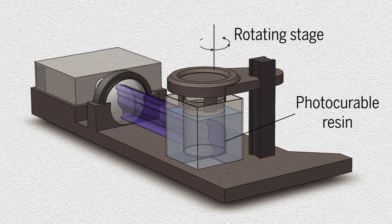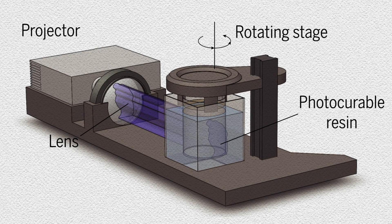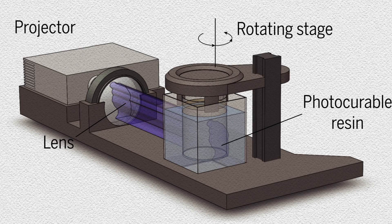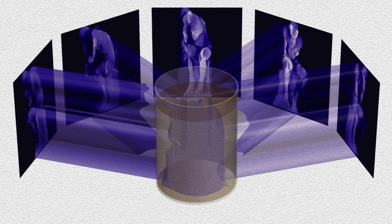The researchers used a computer-controlled digital light projector to cast images through a rotating clear container holding a photosensitive gel. The projected images are based on a scan of a 3D object.